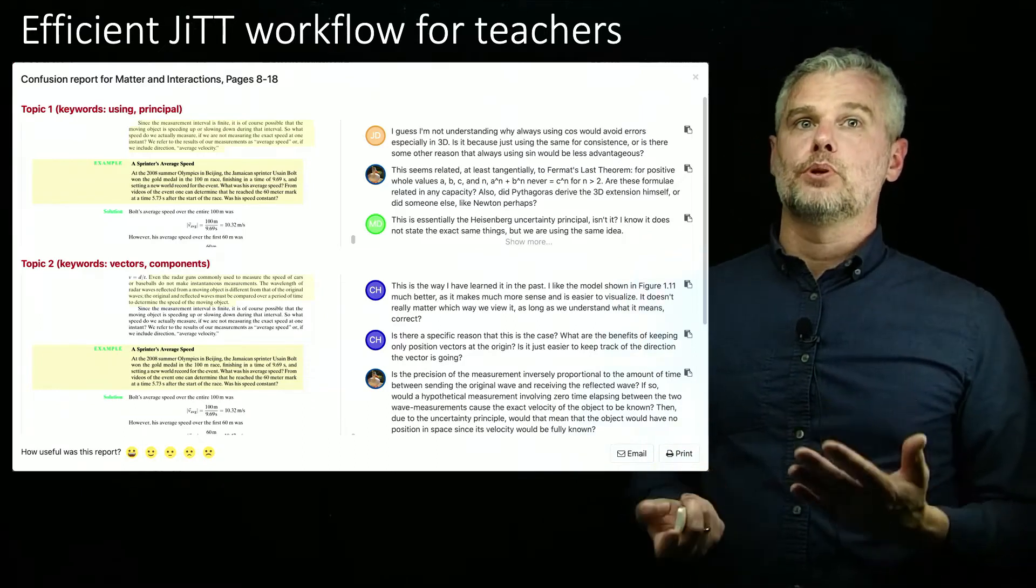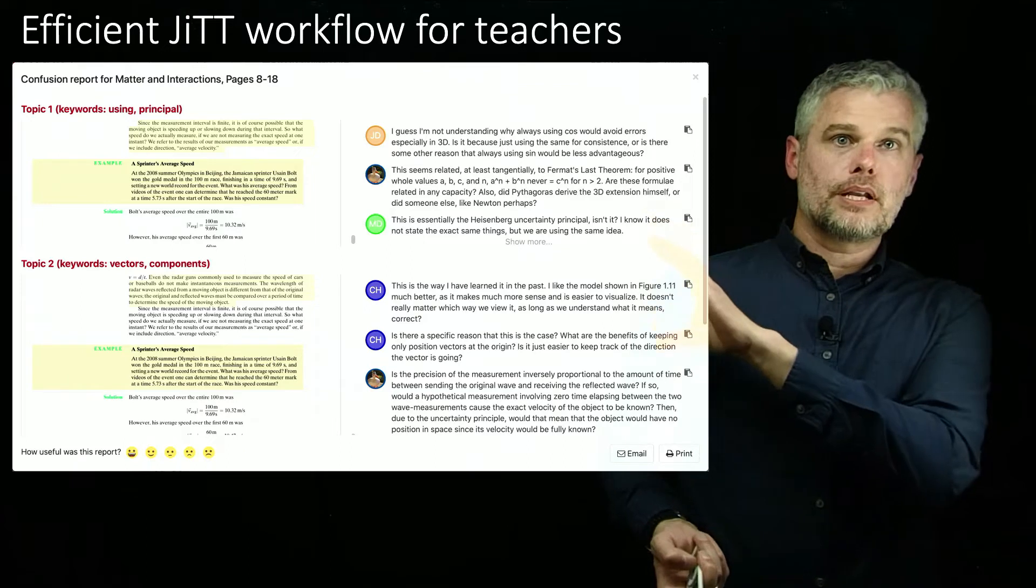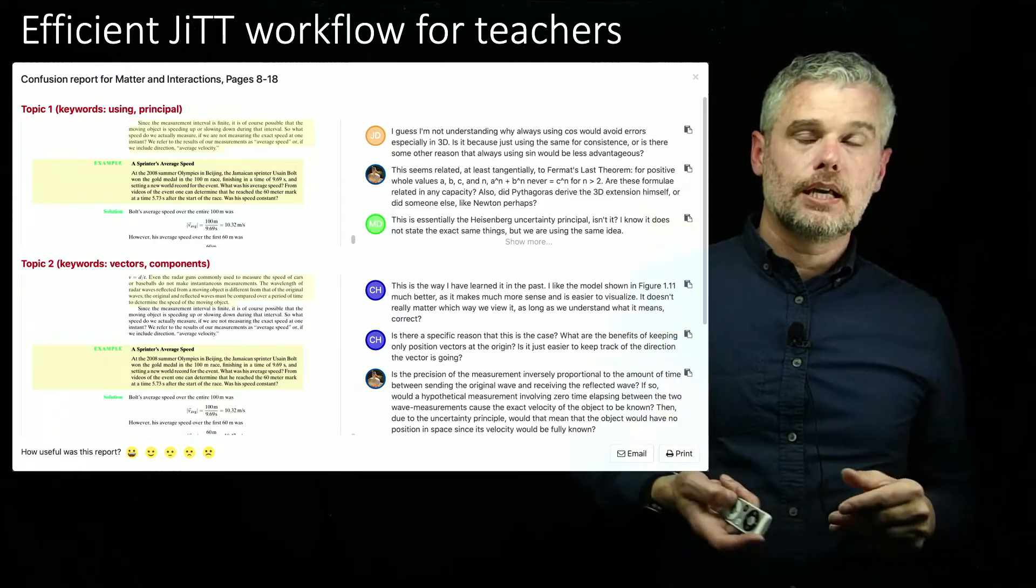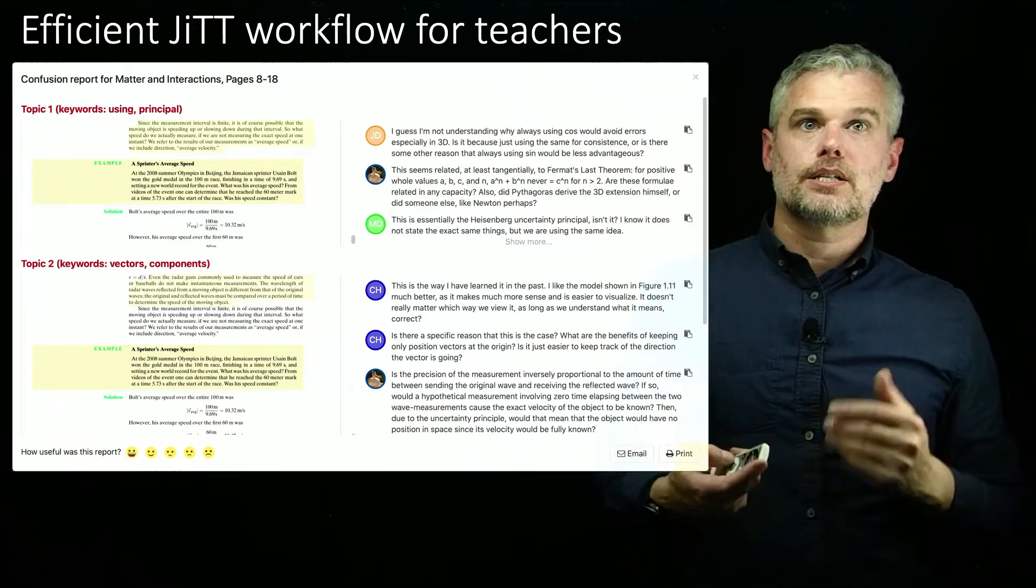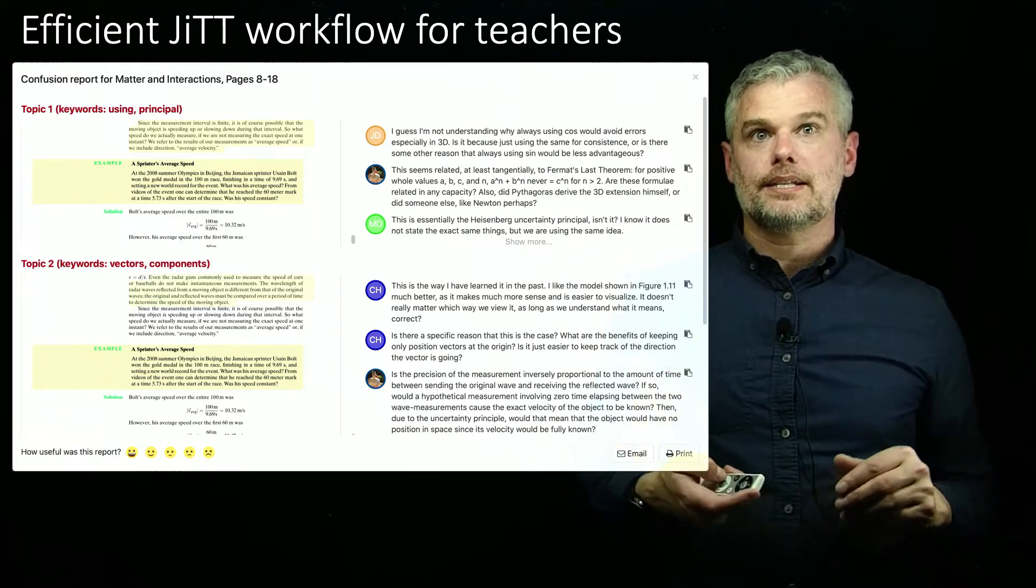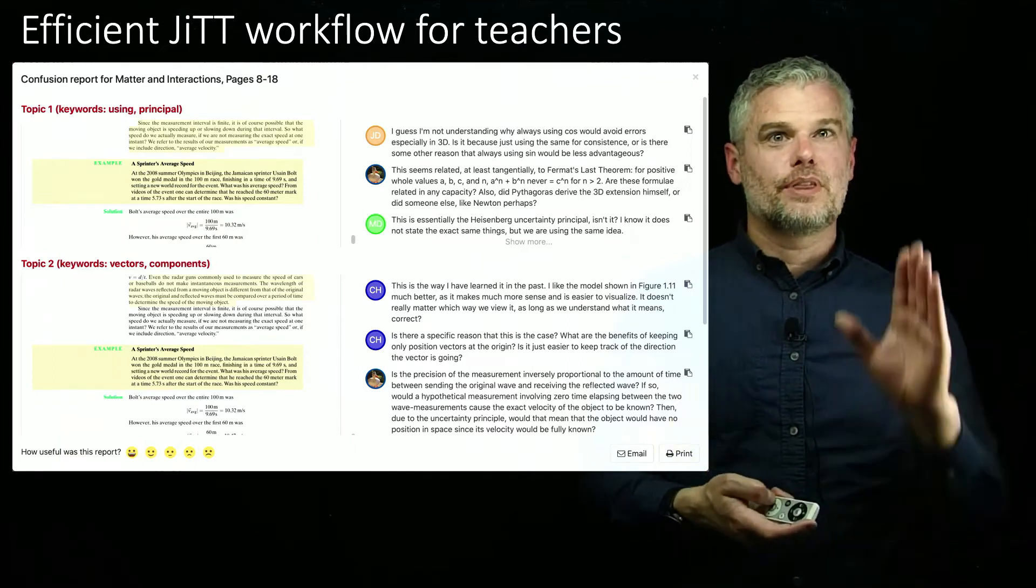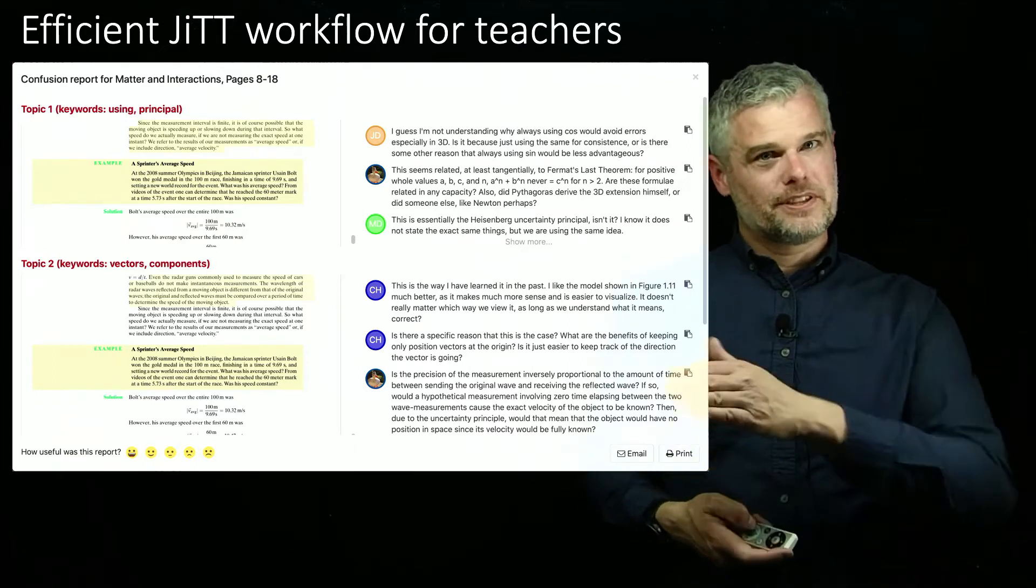My classes are small enough, I can respond to every single question. But for bigger classes, Perusall will generate a confusion report. It will highlight the parts of the reading that seem to be generating the most action, and some salient questions and discussions from those parts of the reading. And you can walk into the class already knowing what the pulse is of your class responding to that particular class. It's going to be different than last year's class.